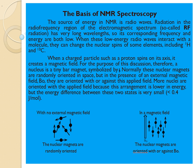RF radiation has a very long wavelength, so its corresponding frequency and energy are both low. As we already know, when wavelength is high, energy is low, because E equals hc upon lambda. When these low energy radio waves interact with a molecule, they can change the nuclear spin of some elements including H1 and C13. When a charged particle such as a proton spins on its axis, it creates a magnetic field.